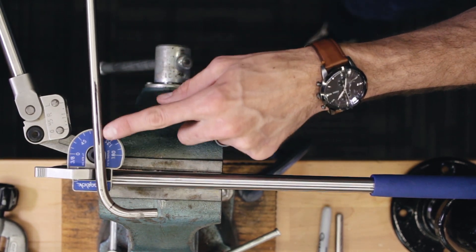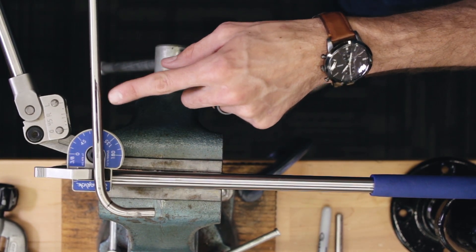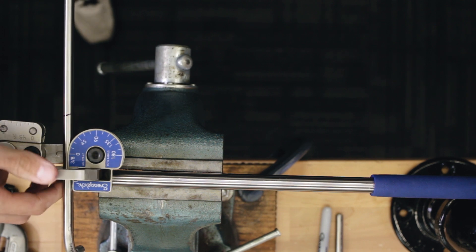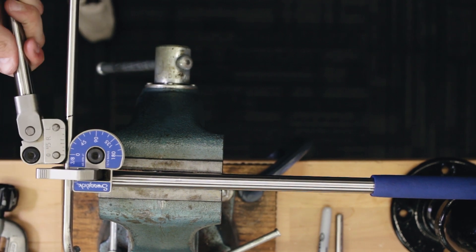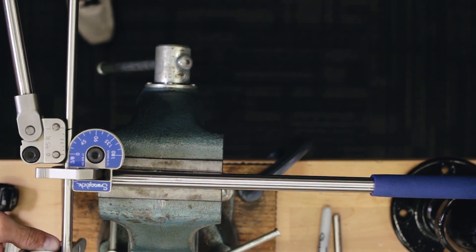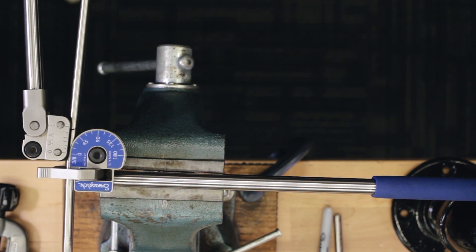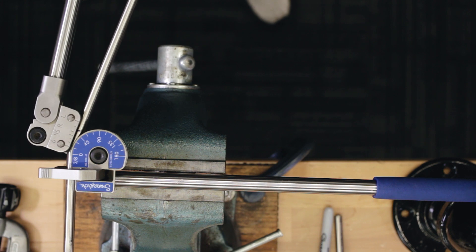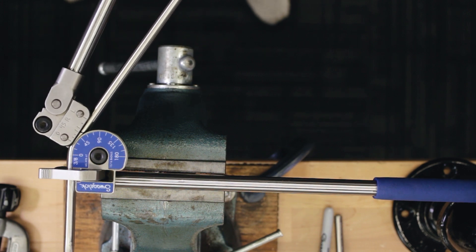For this bend, use the mark you made earlier to help you align the tubing correctly for your next bend. You'll need more precision on this second bend, so use a level to get your angle correct. Tighten the latch and make your bend. This might be a little bit more of a trial and error process, just don't bend it too much.